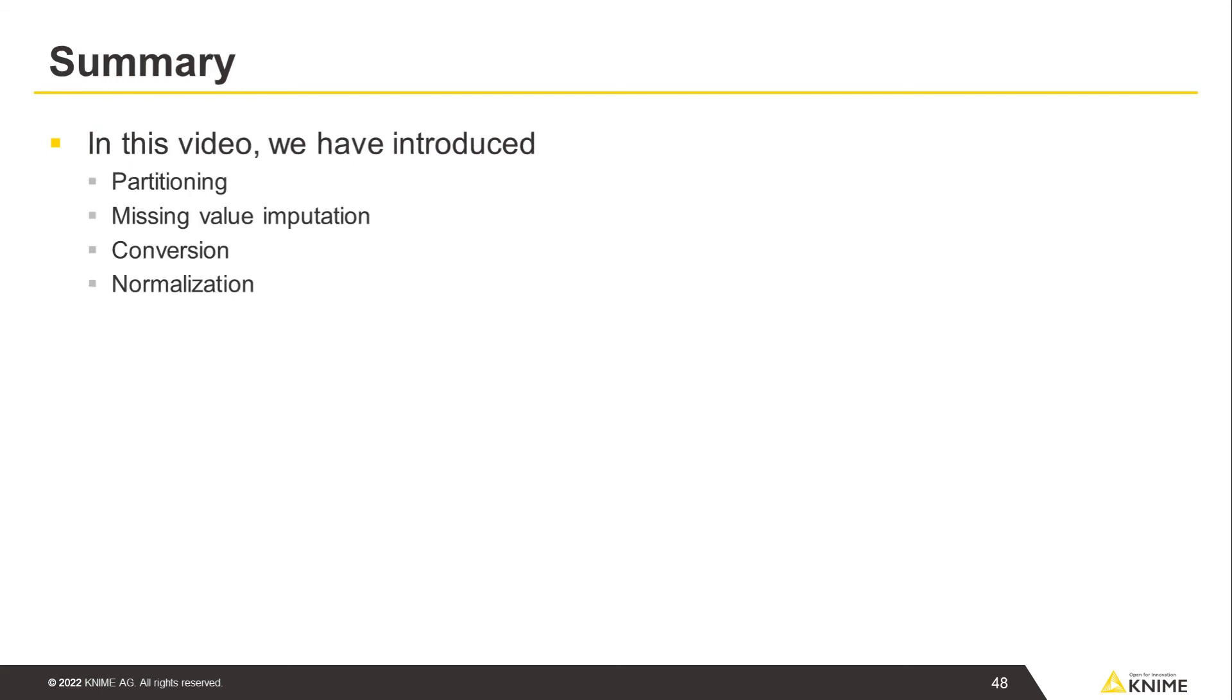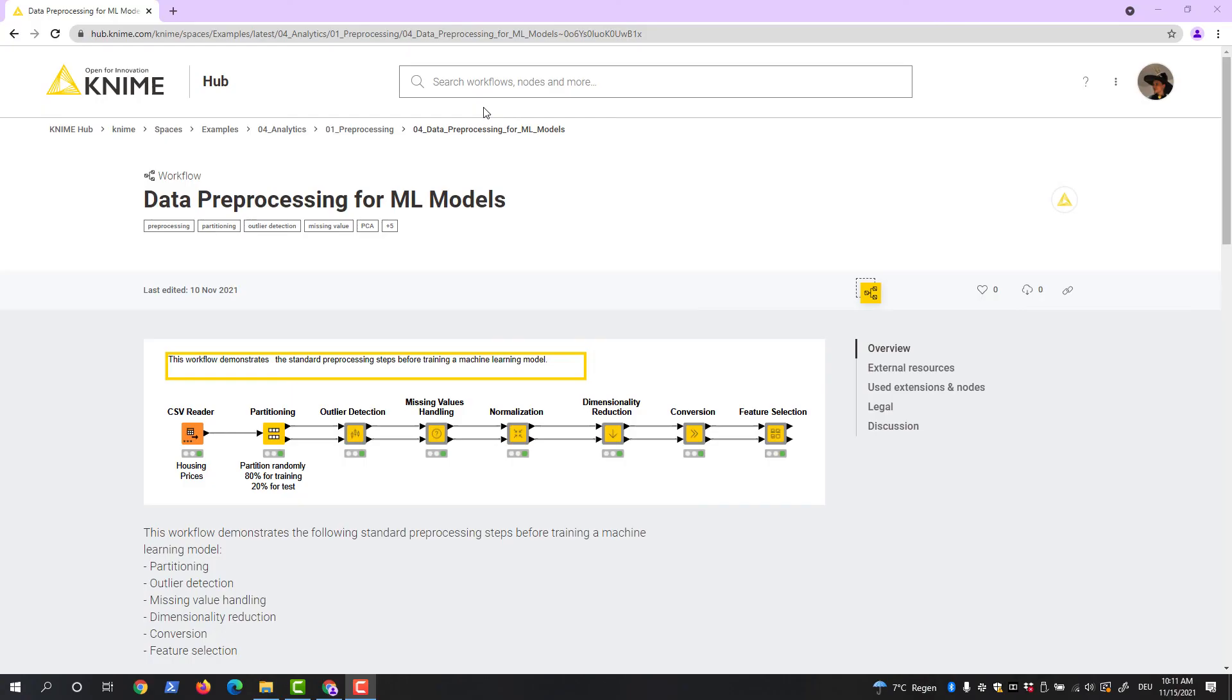In this video, we have introduced partitioning, missing value imputation, conversion, and normalization as common data preparation techniques before training a machine learning model. We have introduced theory behind each technique and shown the nodes you can use for each task. Explore this further by trying out the workflow. Just follow the link attached to this video.